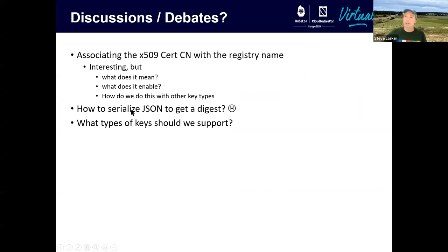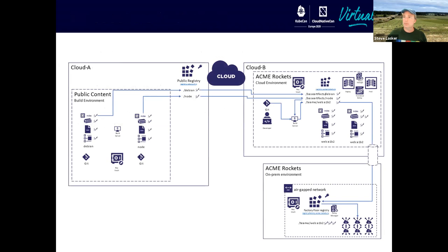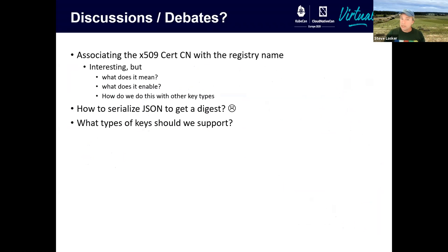The interesting things we're chewing on: how do we serialize JSON to get a digest — not a fun problem but we need closure because there's sharp glass there. And then the key type conversation — X.509 is expensive, we're talking self-signed certs, Let's Encrypt, other things. That's the next round of conversations. We've got 10 minutes — what do people think?